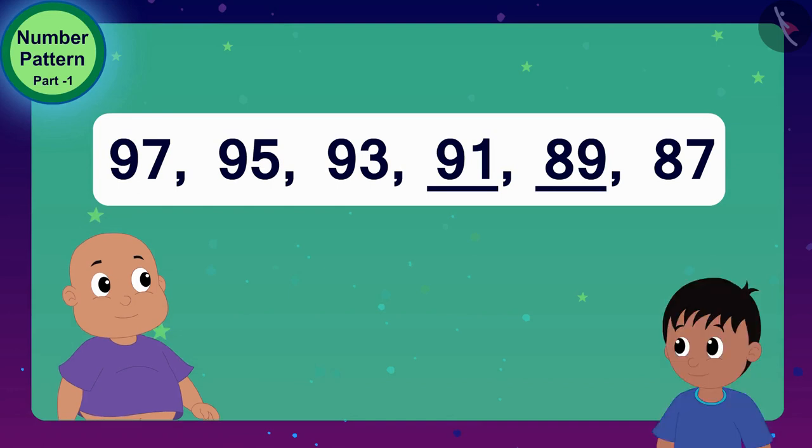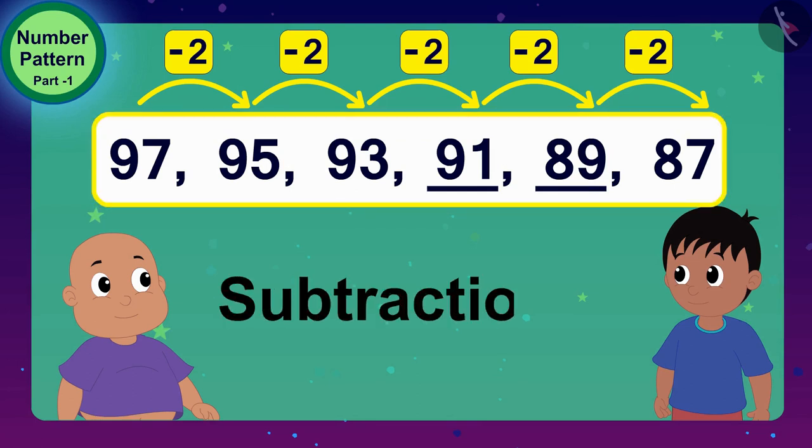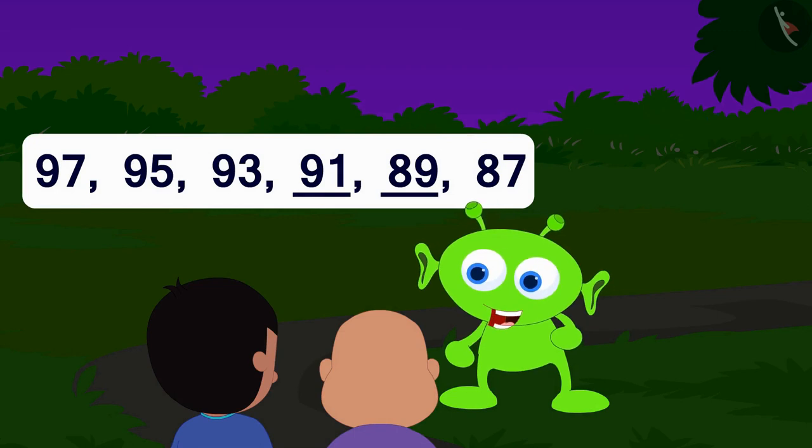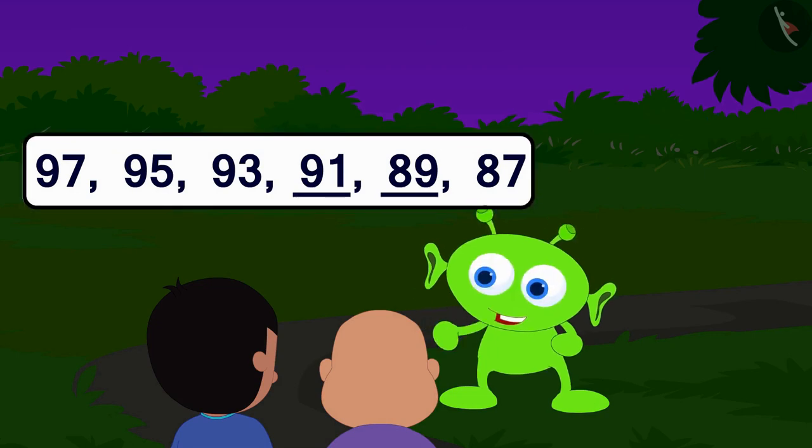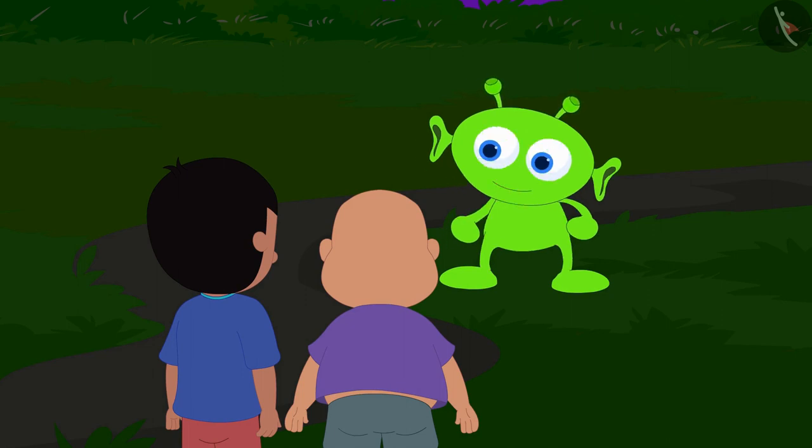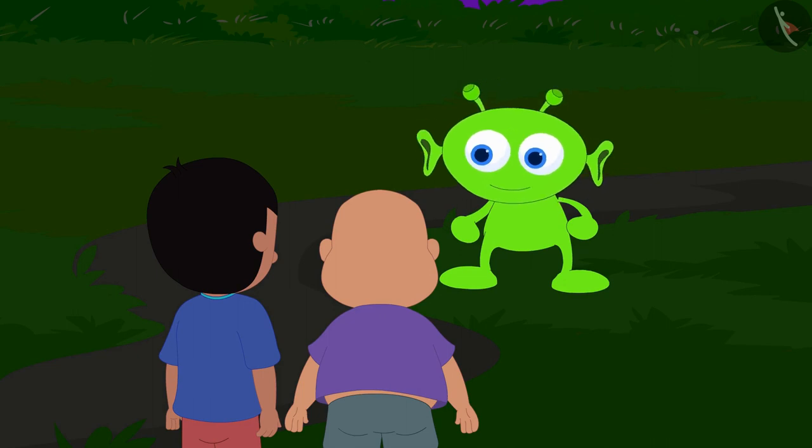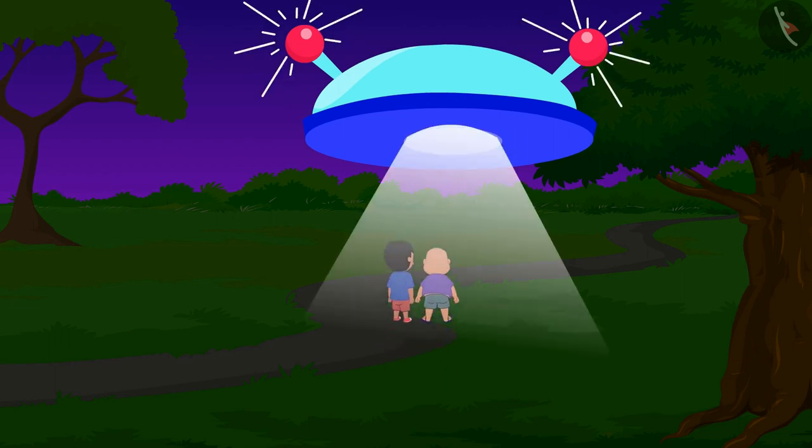Raju and Bablu, like you, completed this number pattern by using the subtraction process. Raju and Bablu and the alien set out to travel space in the flying saucer.